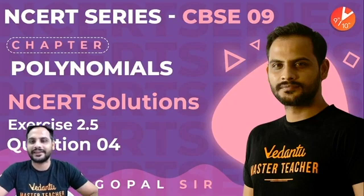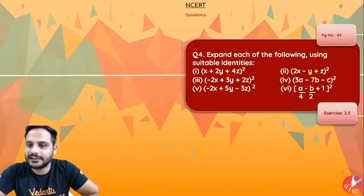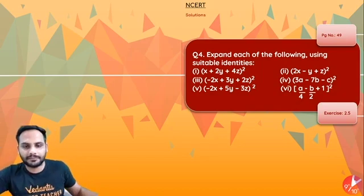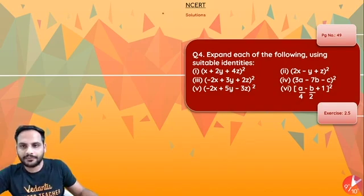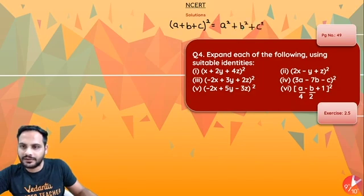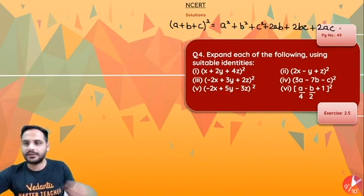The question says: expand each of the following using suitable identities. Now if I look at all of these, you just need to understand one simple thing — that is (a + b + c)². No need to remember different things, just remember this: (a + b + c)² = a² + b² + c² + 2ab + 2bc + 2ac. This is the identity which will be used everywhere.